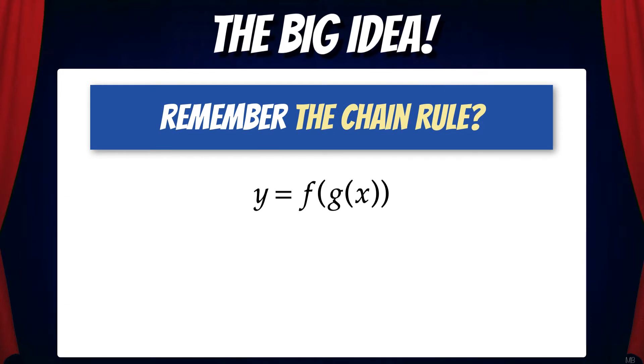Here's the big idea. Remember the chain rule, which lets us find derivatives of compositions of functions? If y equals f of g of x, then y prime equals f prime of g of x times g prime of x.